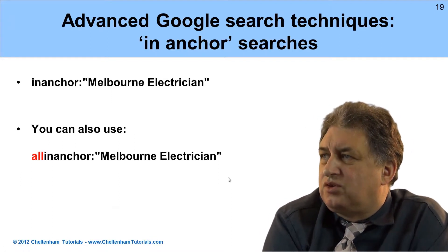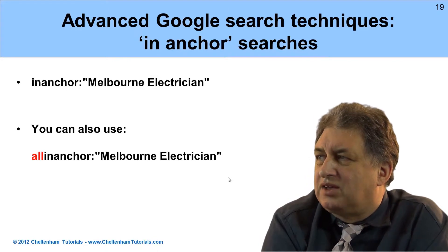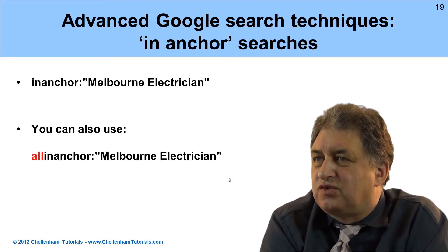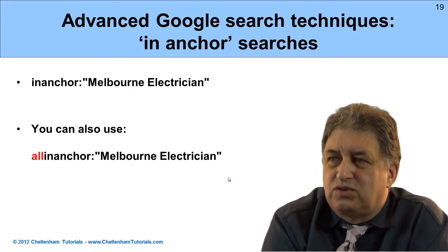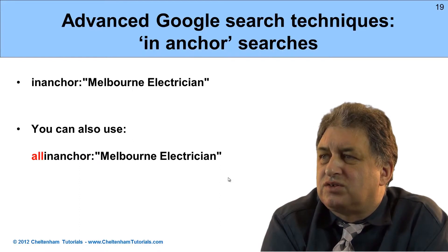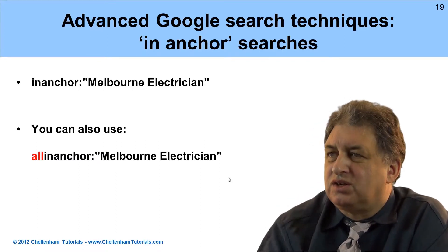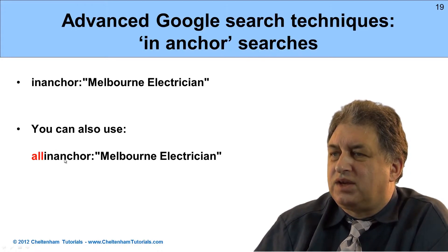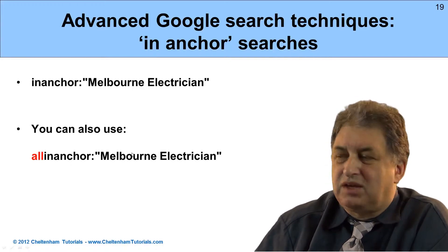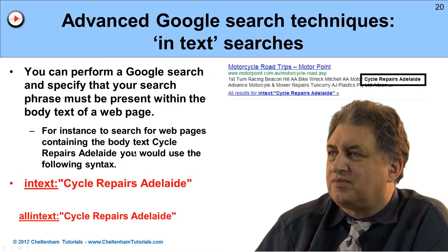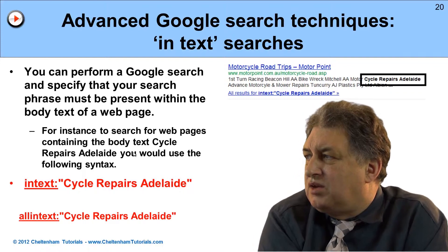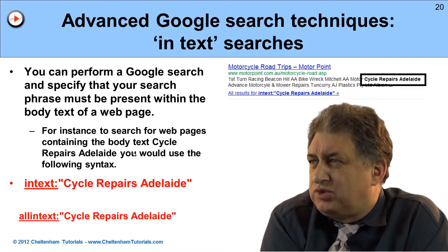You can also use advanced Google search techniques to search anchor text - the text within a link. For instance, to find anchor text using the words 'Melbourne electrician,' use the 'inanchor:' syntax. The difference between 'inanchor:' and 'allinanchor:' is that 'inanchor:' can match either word, whereas 'allinanchor:' means all of the words must be within the anchor text.